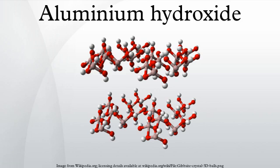Properties: gibbsite has a typical metal hydroxide structure with hydrogen bonds. It is built up of double layers of hydroxyl groups with aluminium ions occupying two thirds of the octahedral holes between the two layers. Aluminium hydroxide is amphoteric. It dissolves in acid, forming Al(H2O)6 3+ or its hydrolysis products.